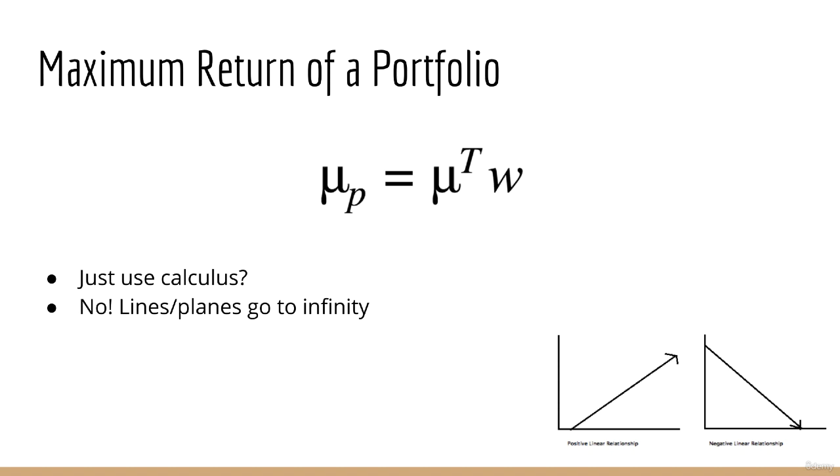Well, for several reasons. First, the maximum of this function is infinity. You can imagine that this is like a plane, or in one dimension it would be a line. Lines can go on forever, so the maximum is infinity. Second, this disregards one important fact, which is that the sum of the weights must equal one. Otherwise, it's not a valid portfolio.